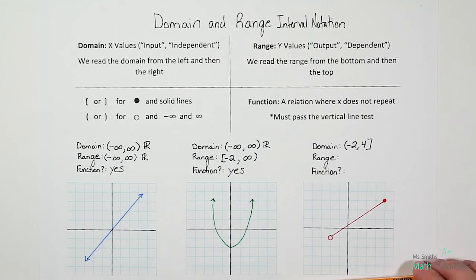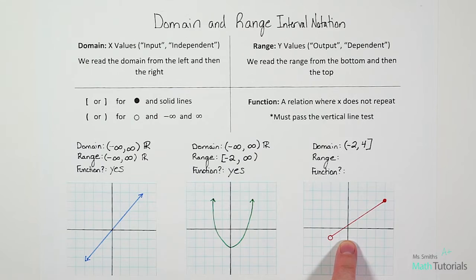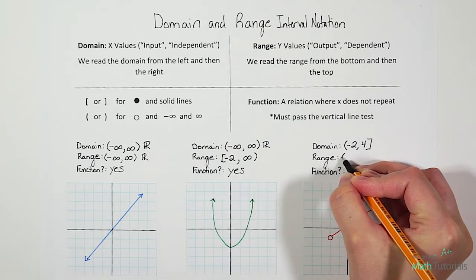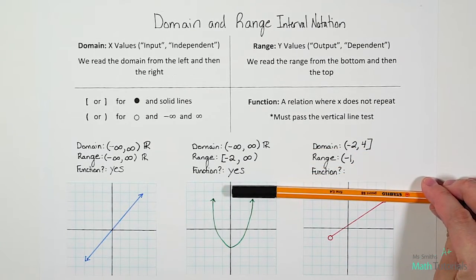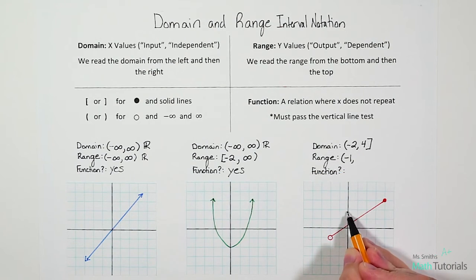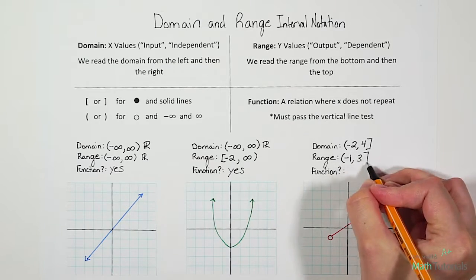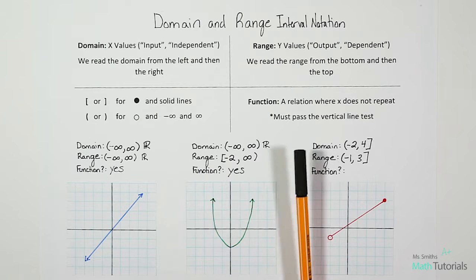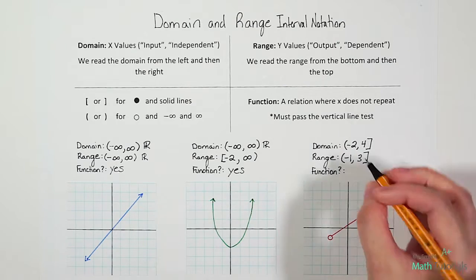For our range, let's look from the bottom up. The first place we hit is an open circle at negative 1. For range, we care about the y-axis, not x. We hit negative 1, and open circles always get parentheses. When we measure from the top, what's the first thing we hit? It falls at positive 3 on the y-axis. It is a solid point at positive 3, so it gets a bracket. Is this a function? That red line is only touching our vertical line once at a time, so yes, this is a function.